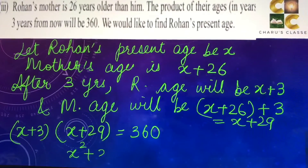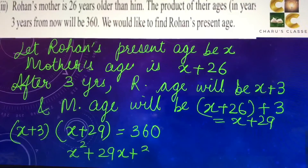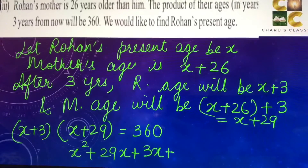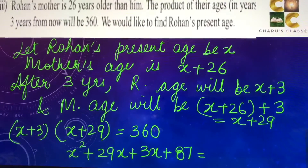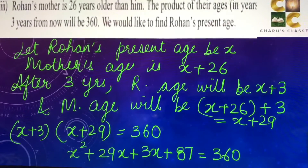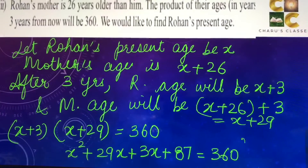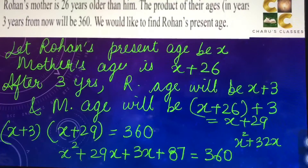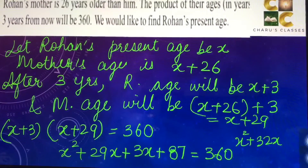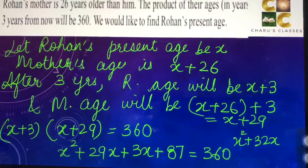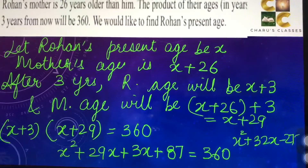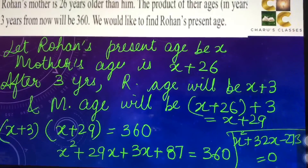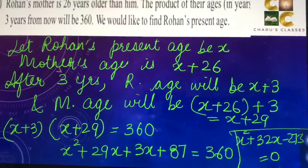Multiplying: x² + 29x + 3x + 87 = 360, so solving we get x² + 32x + 87 − 360 = 0, which gives x² + 32x − 273 = 0. So this is the required quadratic equation.